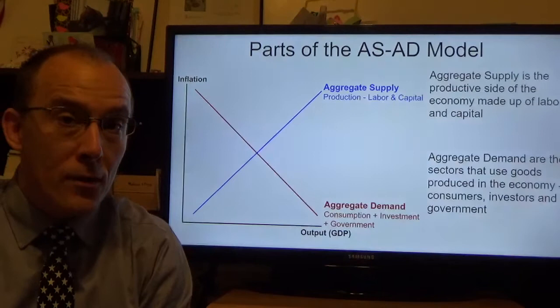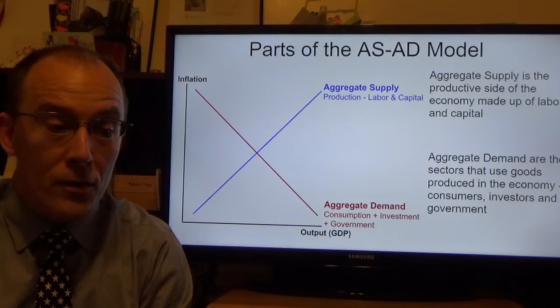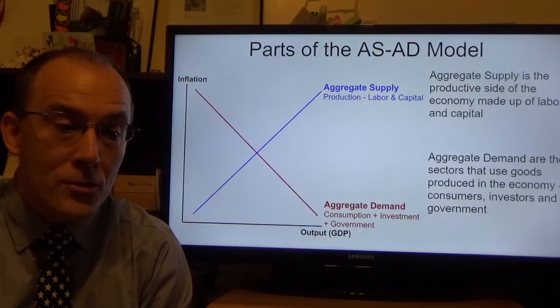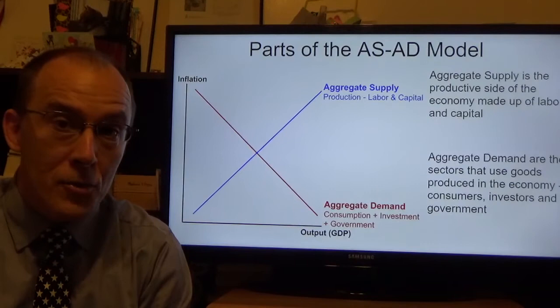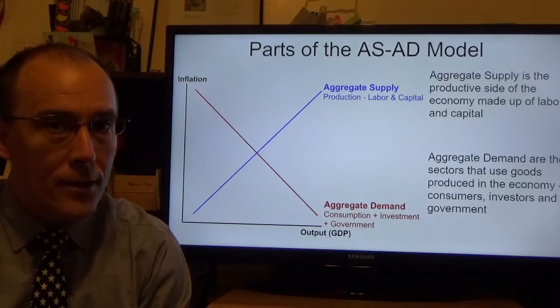The general framework of the model takes this structure where you have inflation on the vertical axis, output on the horizontal axis, and you have an upward sloping aggregate supply curve representing the production side of the economy, made up of the amount of labor and capital an economy has. You also have the downward sloping aggregate demand curve representing consumption, investment, and government spending. Net exports could also be included but we're going to ignore that for right now.